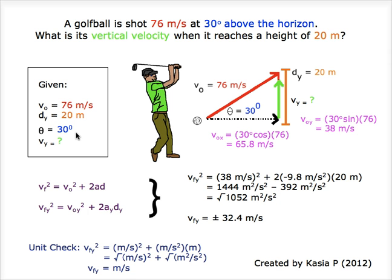The 30 degrees above the horizon in blue tells us at what angle the projectile, which in this case is the golf ball, was shot. And finally, the question asks us to find the vertical velocity in green.